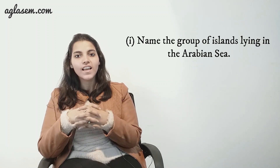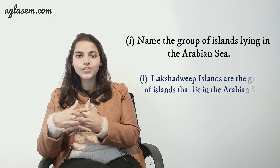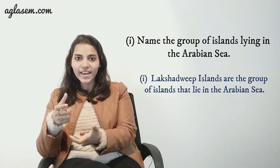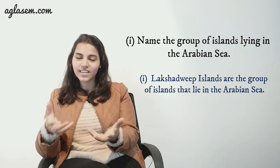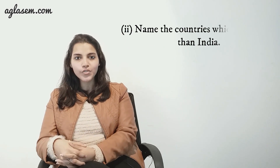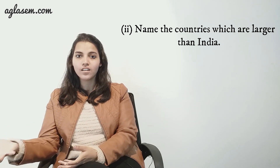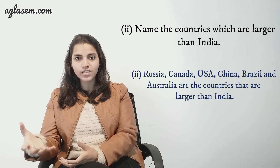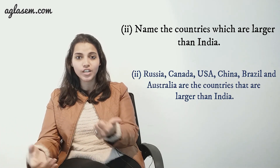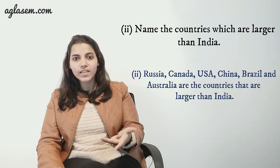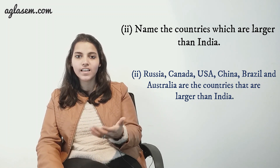Moving ahead to the next question: answer the following questions briefly. Number one: name the group of islands lying in the Arabian Sea — the Lakshadweep Islands are the group of islands that lie in the Arabian Sea. Second: name the countries which are larger than India — Russia, Canada, USA, China, Brazil and Australia.